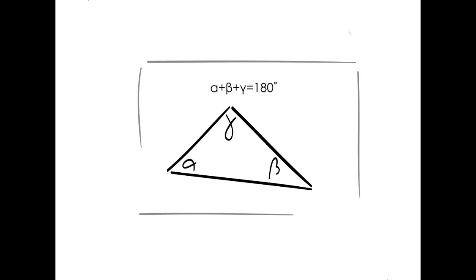The sum of the measures of the three angles in any triangle is always equal to 180 degrees.